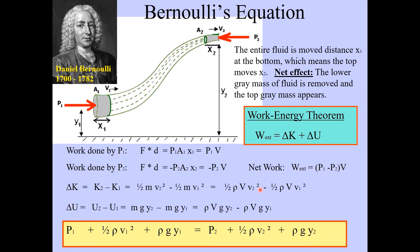Combining net work equals delta K plus delta U, and putting all the subscript-1 terms on the left and subscript-2 terms on the right, we get the full form of Bernoulli's equation: p1 plus one-half rho v1 squared plus rho g y1 equals p2 plus one-half rho v2 squared plus rho g y2. The pressure term, the kinetic energy term (one-half rho v squared), and the potential energy term (rho g y) appear on both sides.